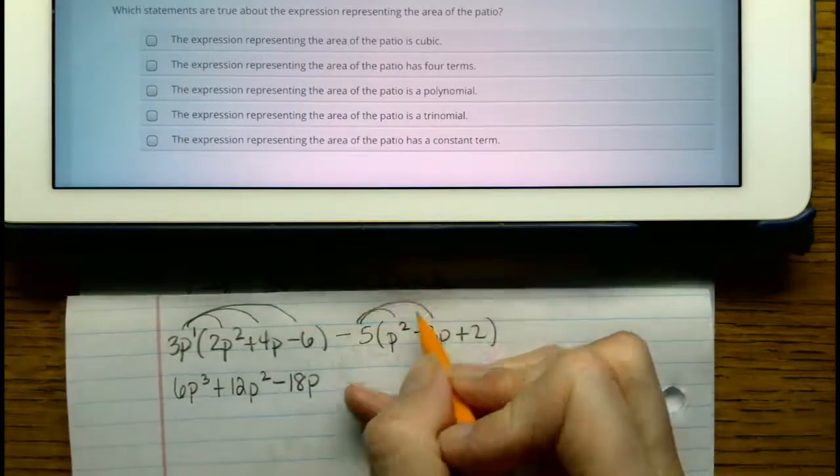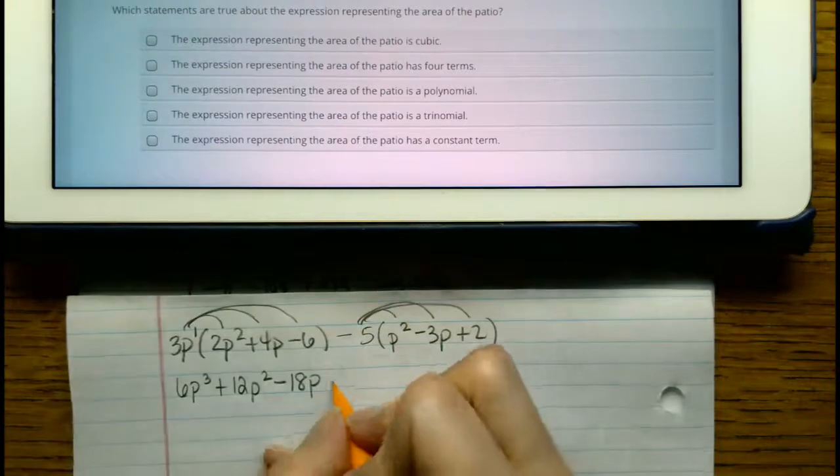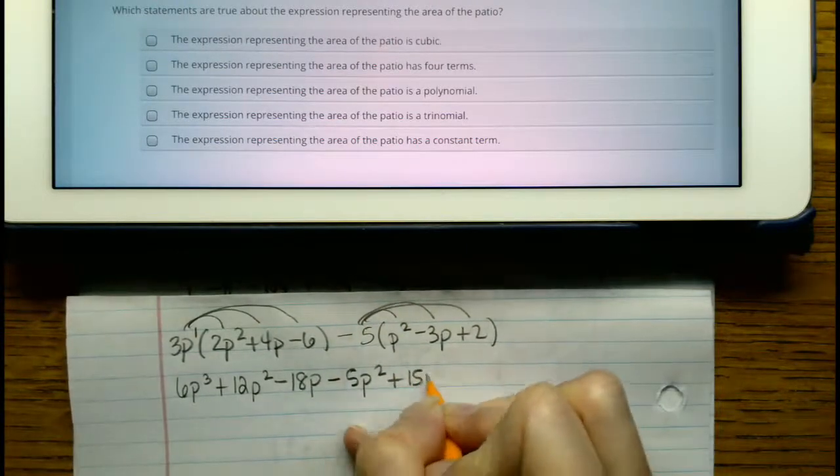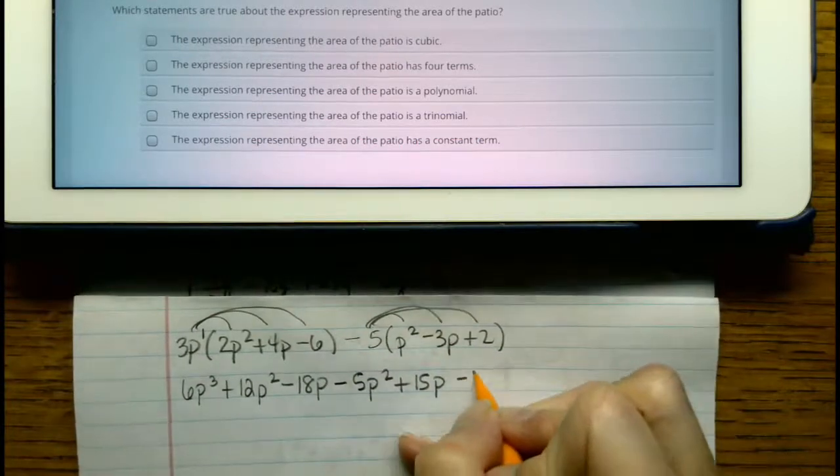We're going to distribute here as well, be careful because there's a negative, and it's going to be minus 5p squared plus 15p minus 10.